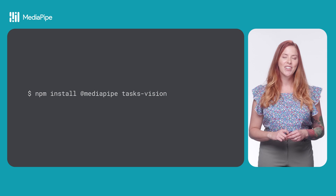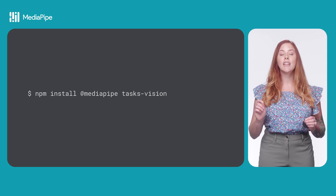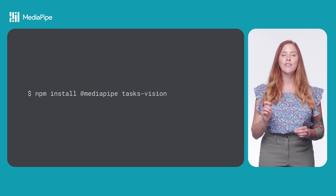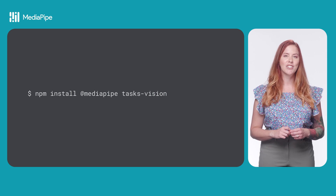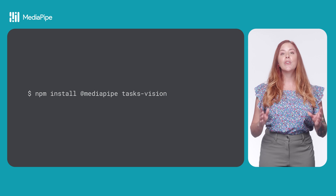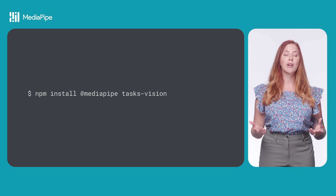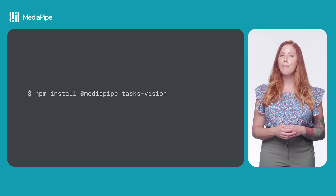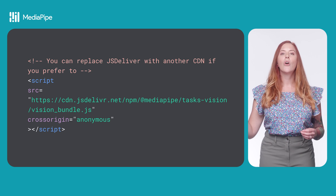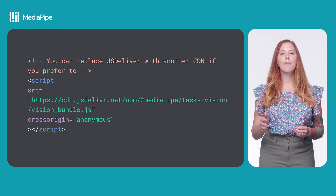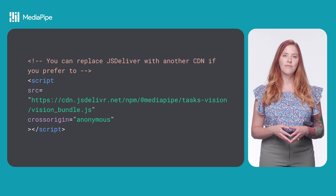Now that you're more familiar with the Hand Landmarker model, you're ready to add MediaPipe solutions to your app. First, install the TasksVision package. You can download the package using NPM and use a JavaScript compilation tool like Webpack, or you can import the package using a CDN.